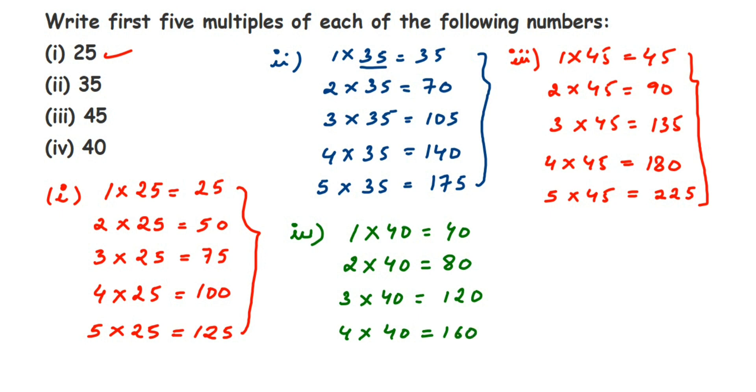4 x 4 is 16 and just put the 0. 3 x 4 is 12, just put the 0, that's it. And 5 x 40, so 4 x 5 is 20, and put a 0 there. So that's it, 200.